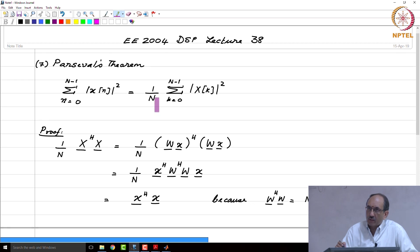If you slightly redefine the DFT by splitting this 1 over n as 1 over root n in the forward and the inverse transforms, then this norm will exactly be equal without this scale factor.